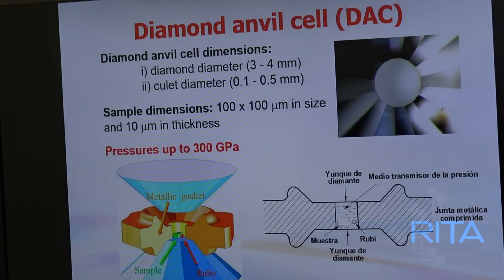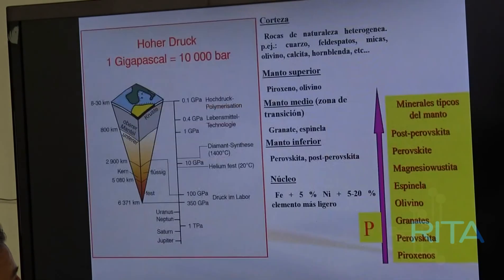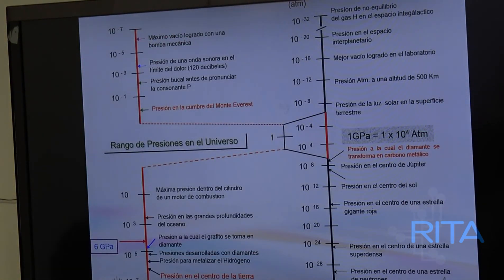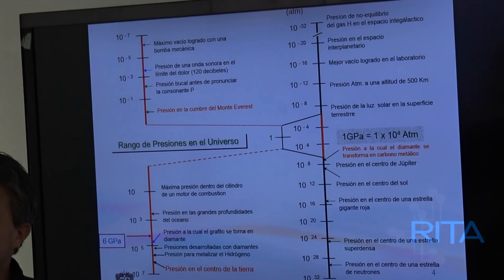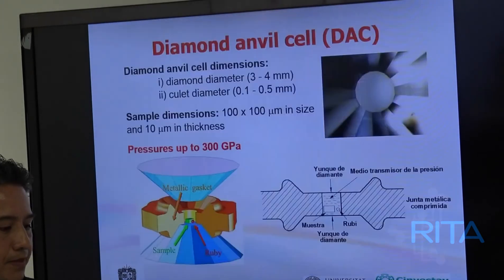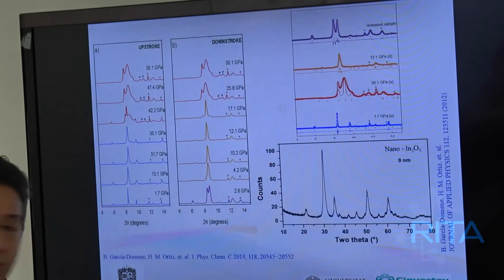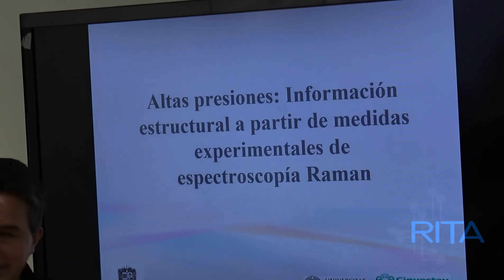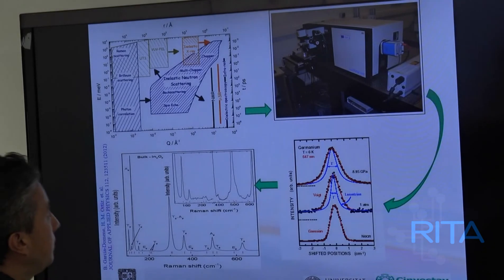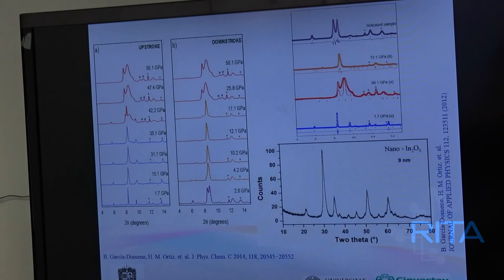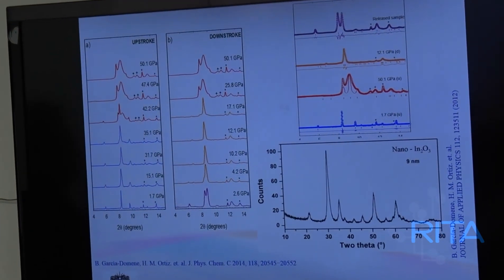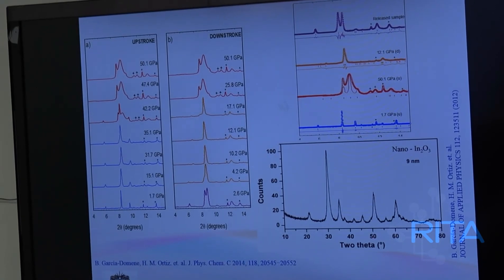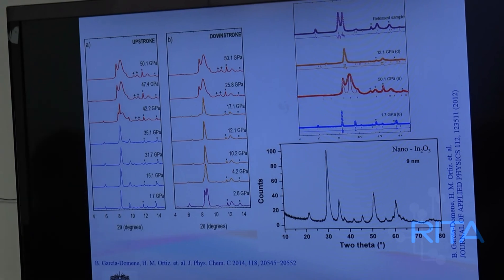Estos equipos se pueden medir hasta 300 GPa — estamos hablando de 10³ GPa, presiones en la profundidad de los océanos, como la fosa de las Marianas. Podemos simular presiones hasta ese valor experimentalmente. Lo que le pasa al material en volumen: cuando está en volumen, sus distancias son del orden de micras.